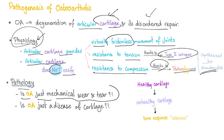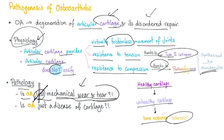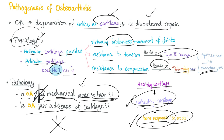Is osteoarthritis just mechanical wear and tear? No, that's a big mistake. Osteoarthritis is much more than that. You start with a healthy cartilage, then it becomes unhealthy cartilage, then the bone responds — called sclerosis. You lose cartilage but you grow bone, which is problematic. Osteoarthritis is not just a disease of cartilage — it's a disease of the cartilage and the bone, called subchondral sclerosis. Subchondral means beneath the cartilage, and beneath the cartilage is bone.